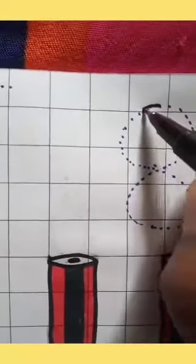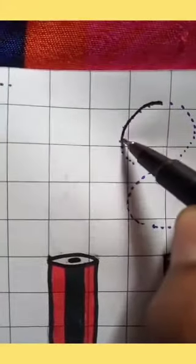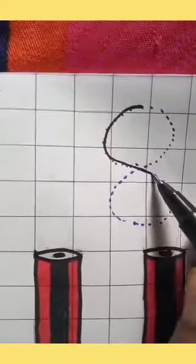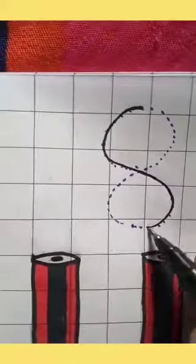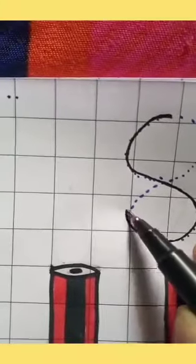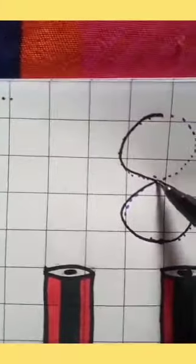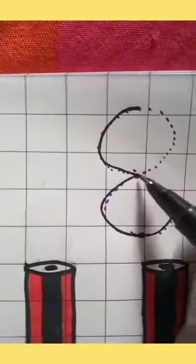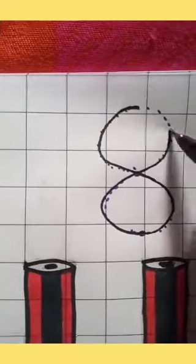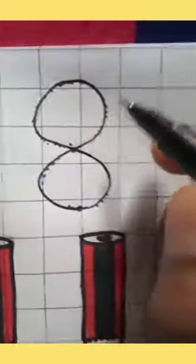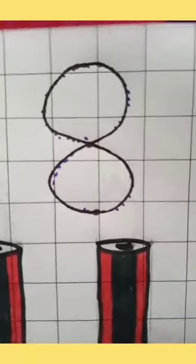Draw a left curve. And from this point, draw a right curve. From here too, draw a left curve again. Cut the line, and again draw a right curve. Join with the left curve. This is number 8.